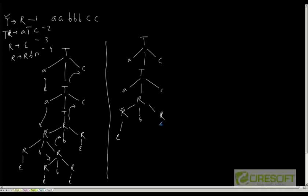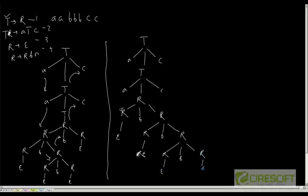For the rightmost R, I replace it again with RBR. So for the leftmost non-terminal I used rule 3 (epsilon), and for the rightmost I used rule 4. That R becomes epsilon, and then the next R is also replaced with epsilon. Doing a left-to-right traversal gives a, a, b, b, b, c, c. This shows that choosing a different rule for a given non-terminal can produce a different tree structure.